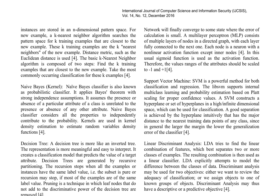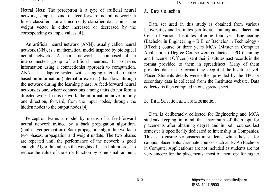Kernels are used in kernel density estimation to estimate random variables' density functions. Decision trees create a classification model that predicts the value of a target attribute through recursive partitioning, stopping when all examples have the same label value or when most examples have the same label value. Pruning is used to remove leaf nodes that do not add to the discriminative power of the decision tree. Neural networks, specifically the perceptron, process information using a connectionist approach. A feedforward neural network is one where connections among units do not form a directed cycle, and information moves in only one direction, from input nodes to output nodes. The backpropagation algorithm is used to train the network, adjusting the weights of each link to reduce the error function.